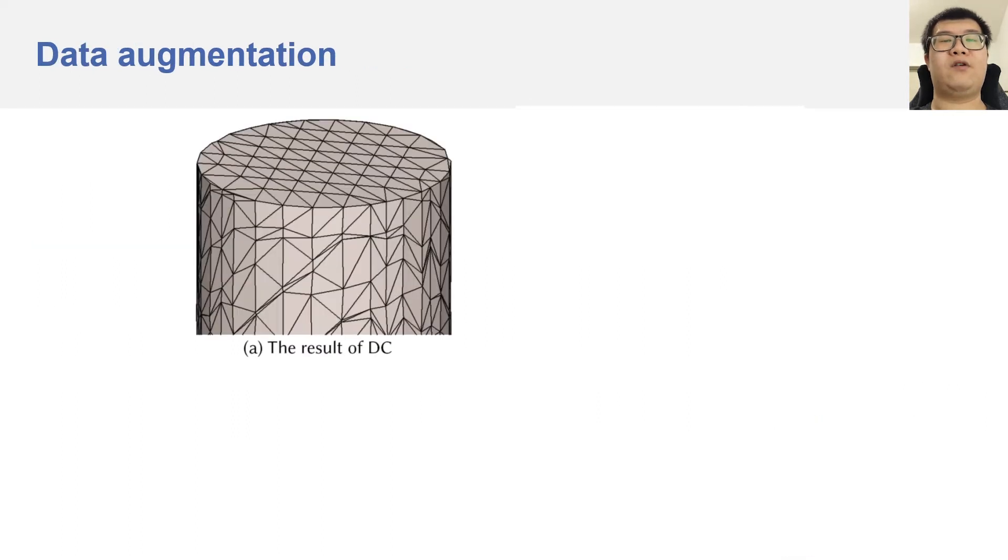However, the quadratic error functions in dual contouring are very sensitive to the normals of the intersection points. And since the training shapes are discretized polygonal meshes, the normals of the intersection points are not exactly accurate. Therefore, if we directly apply dual contouring, the output meshes usually have poorly positioned vertices on curved surfaces.